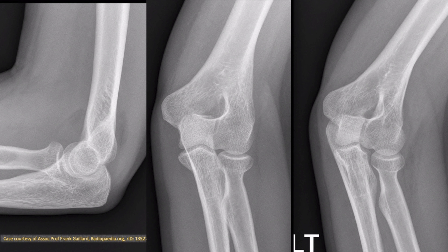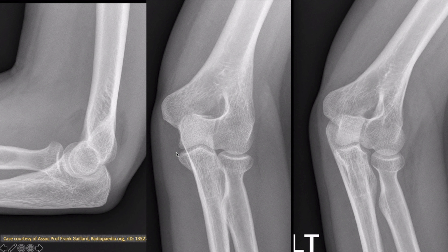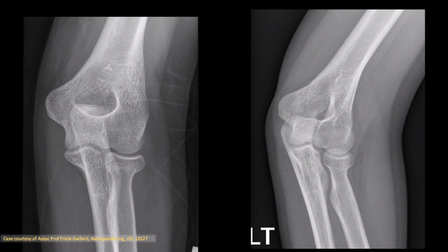X-ray of the left elbow demonstrates a prominent anterior fat pad sail sign with the posterior fat pad also visible, consistent with a large joint effusion. No definite fracture can be seen, although the radial head appears a little ill-defined laterally. This is the most common site for fractures in this scenario. Repeat X-ray one week later shows a thin ill-defined sclerotic line along the neck of the radius. This case illustrates the utility of repeat X-rays in the setting of suspected but radiographically occult fractures.